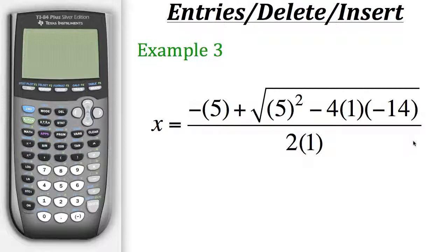Now for this problem we want to use the quadratic formula to solve for x. So we could start putting this into our calculator: negative 5 plus the square root of 5 squared minus 4 times 1 times negative 14.